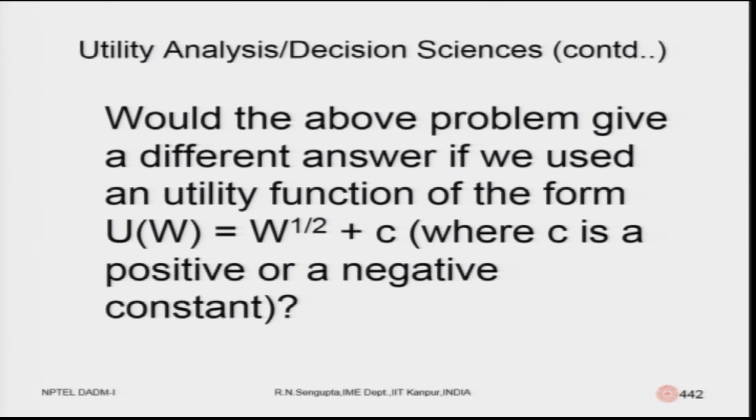A question arises: would a different answer result if we used a utility function u(w) = w^(1/2) + c, where c is a positive or negative constant? If c is positive, the ranking would not change, provided w is non-negative. Any positive ranking already established would not change if the same constant c is added to the functional form of the utility. However, if the utility is positive and you add a negative value, you need to check depending on whether the utility function is quadratic or linear.